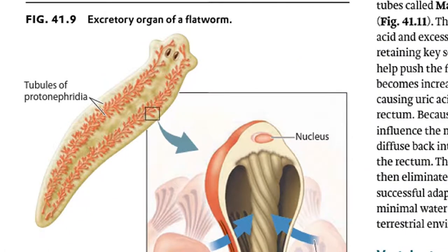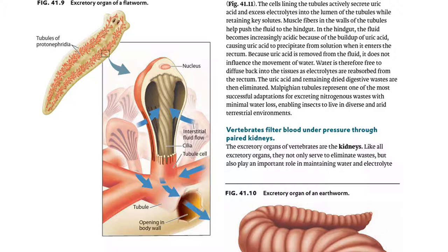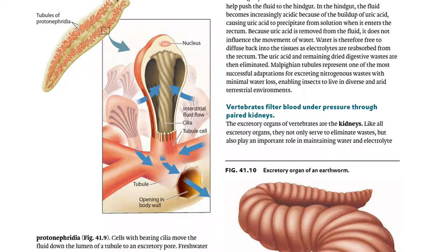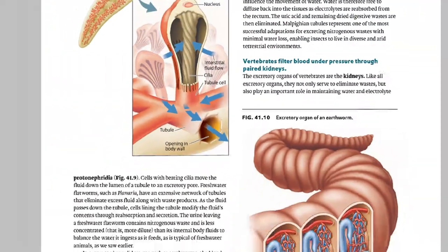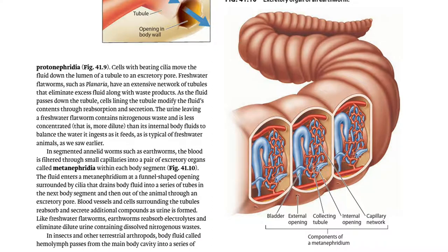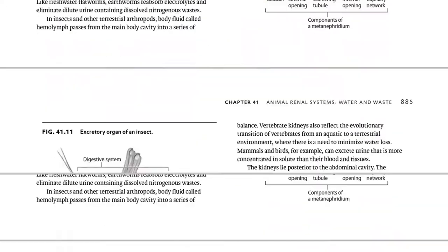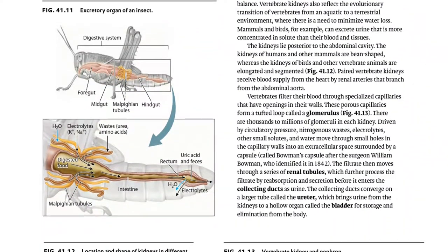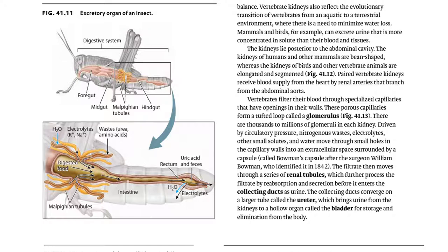In the tubular protonephridia, you can see the flame cell with cilia beating, drawing interstitial fluid in, followed by reabsorption, and then urine expelled through an opening in the body wall. For the metanephridia, the components include: the internal opening in the nephrostome, collecting tubule, bladder, capillary network on the collecting tubule, and the external opening. The Malpighian tubules serve as the excretory organ of insects.